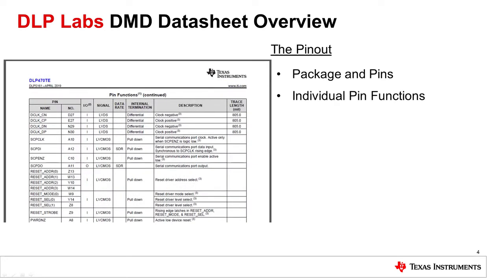The pin functions table in section 5 describes every pin on the package. Each pin is identified by a letter and number designation, a descriptive name, whether it is an input or output, the signaling type, along with any internal termination and internal package trace lengths for critical timing pins. Internal package trace lengths are used when matching trace lengths between the DLP controller and DMD. Further details on layout are covered in section 10.